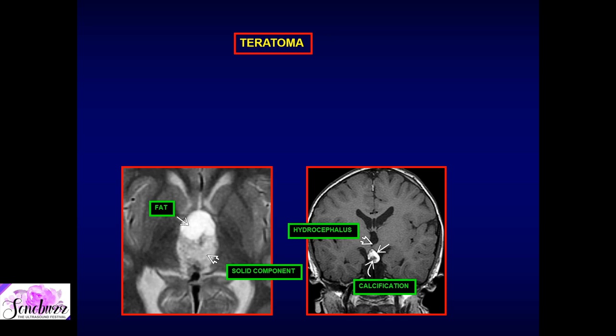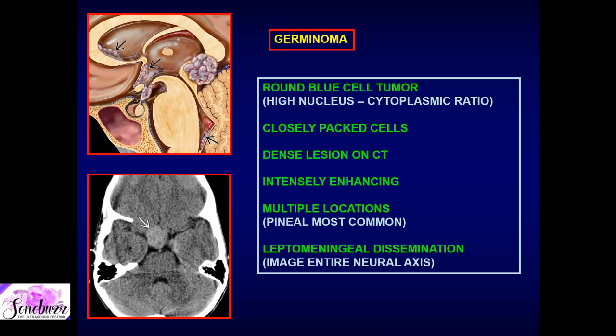Teratoma is a relatively aggressive tumor that can be associated with drop metastasis. When one shows up on the MR scanner, it is our obligation to image the entire neural axis to look for drop metastasis or associated leptomeningeal enhancement — as opposed to epidermoid or dermoid, where this would not be necessary.